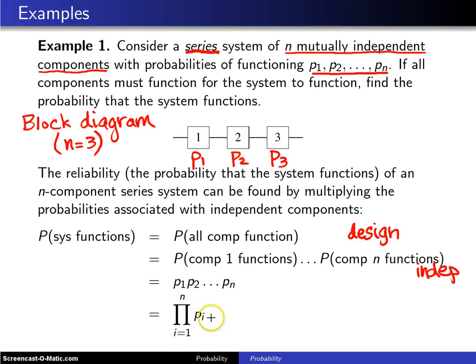You can write that using the pi symbol in this fashion. So this is how you calculate the system reliability of a series system, and this is in many ways the worst possible arrangement of components. There's no backup here. When one component goes out, the entire system goes out.